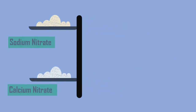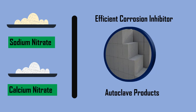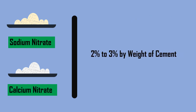Apart from these, sodium nitrate and calcium nitrate are also used as efficient corrosion inhibitors of steel in autoclave products. 2 or 3% sodium nitrate or calcium nitrate by weight of cement is used to serve the purpose.